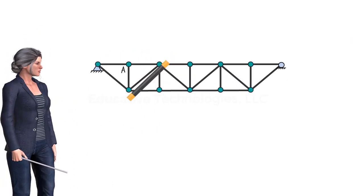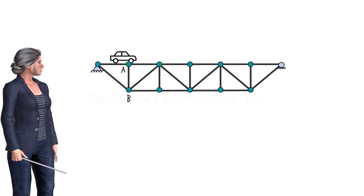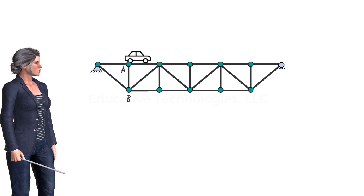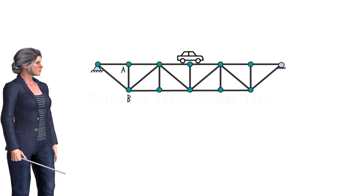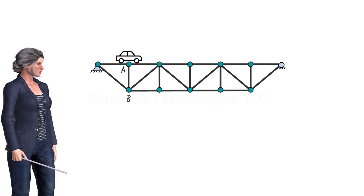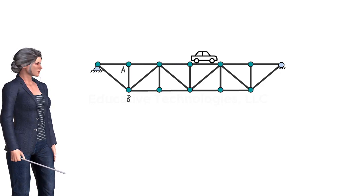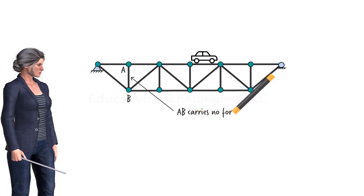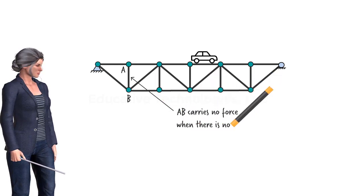Some trusses, such as bridges, are designed to carry moving loads. This means the bridge needs to be analyzed several times, one time for each load position. Therefore, while member AB carries an axial force when the load is acting at or near joint A, the member becomes a zero force member when the load moves further down the bridge, away from A.